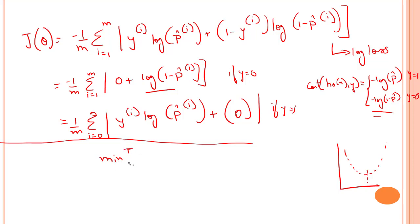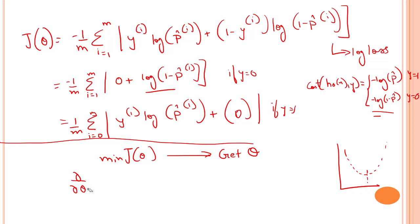We should be minimizing the total cost to get our parameters — the parameters which will help us actually make predictions. That's how the algorithm works. Our cost function, or log-loss function, will be reduced by taking the partial derivative when we do the partial derivative of j(θ).